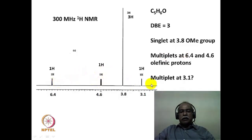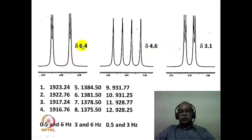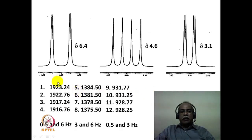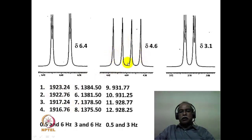So it is possible this molecule has a triple-bonded structure connected via a double bond to a methoxy functional group. The multiplets at 6.4, 4.6, and 3.1 ppm are expanded. All three multiplets are doublets of doublets. This means all three hydrogens are mutually coupled to each other. For clarity, the frequencies of these lines are given: lines 1–4 correspond to the 6.4 ppm multiplet, lines 5–8 to the 4.6 ppm multiplet, and lines 9–12 to the 3.1 ppm multiplet.